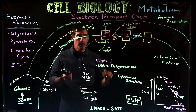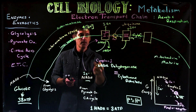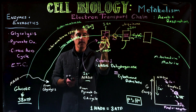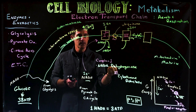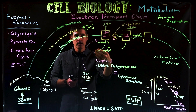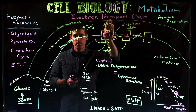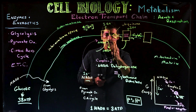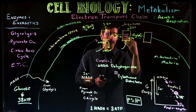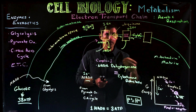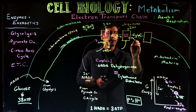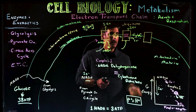So to summarize: two electrons from NADH enter the chain at Complex I (NADH dehydrogenase), which uses their energy to pump three protons, then passes the electrons on. They move through another active transport pump, which pumps three more protons and passes the electrons on to cytochrome C.